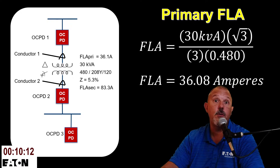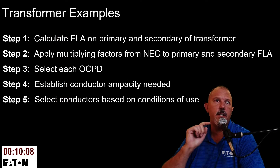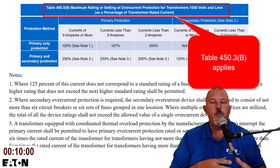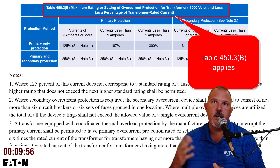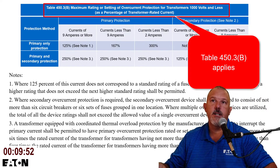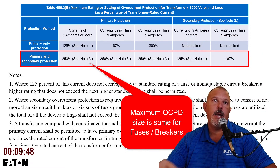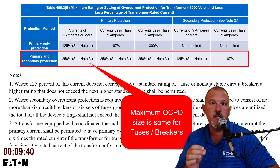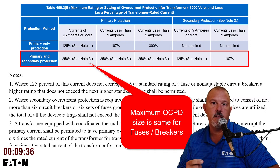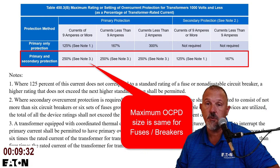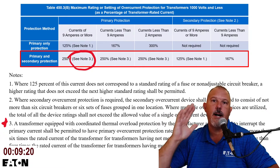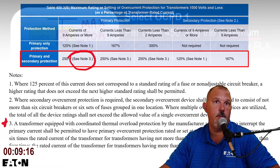Moving to step two, I reference NEC 450.3(B), which covers transformers 1000 volts and less. With both primary and secondary protection, the maximum primary OCPD is 250% of full load amps, and the maximum secondary OCPD is 125% of full load amps. Note 3 in that section — regarding coordinated thermal overload protection — doesn't apply to this 30 KVA transformer, so we can ignore it.